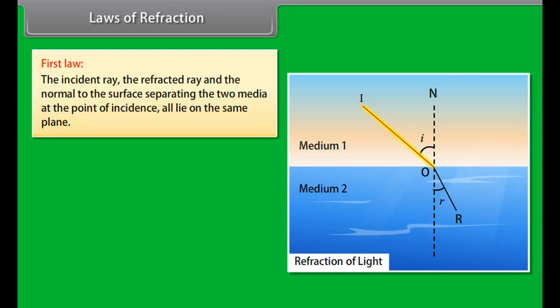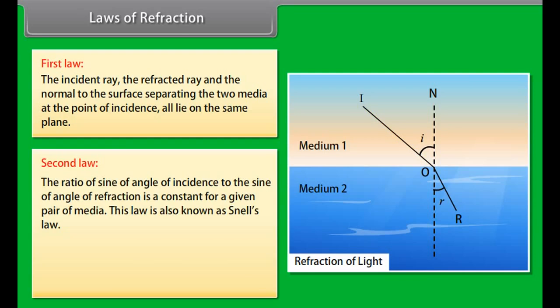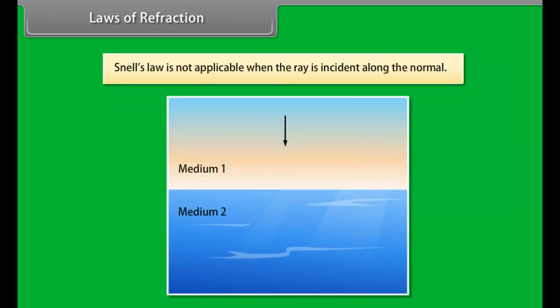Laws of refraction: First law — the incident ray, the refracted ray, and the normal to the surface separating the two media at the point of incidence all lie on the same plane. Second law — the ratio of the sine of the angle of incidence to the sine of the angle of refraction is a constant for a given pair of media. This is known as Snell's law: sin i / sin r = μ, where μ is the refractive index. Snell's law is not applicable when the ray is incident along the normal.